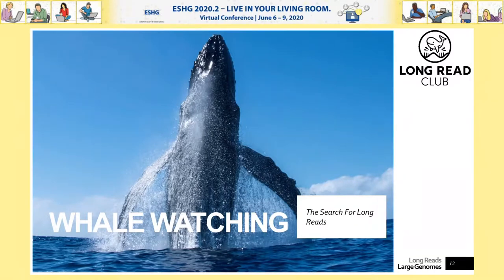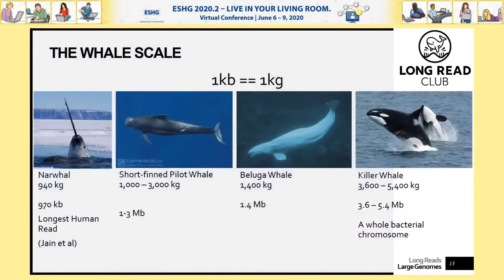Why whale watching? As we were getting longer and longer reads, we needed a way to describe what we meant by a long read. So we came up with the whale scale: you convert the length of your read in kilobases to a weight in kilograms and look for a whale of equivalent size. The longest read in our original human paper was 970 KB — that's a narwhal. A megabase would be a short-finned pilot whale, 1.5 megabases a beluga, and three megabases or more would be killer whale reads.